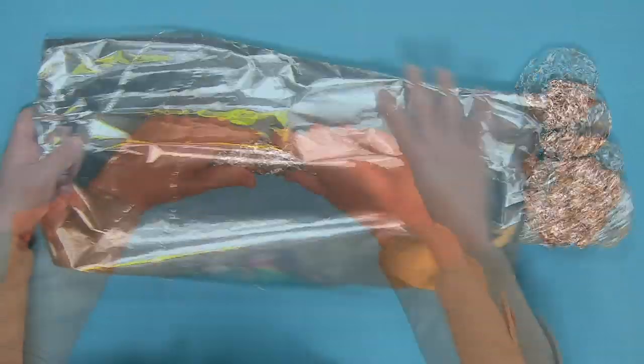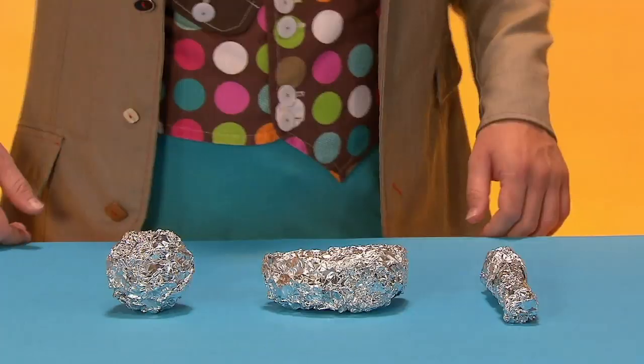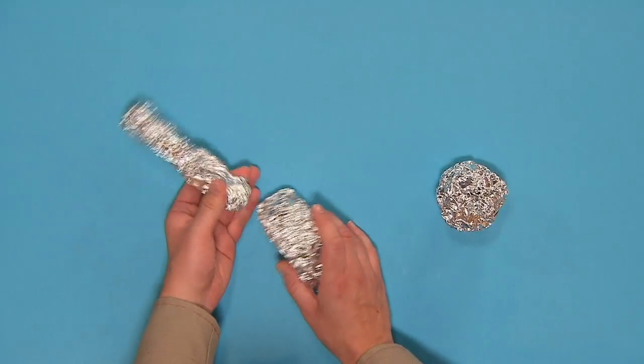And mould some more foil into a sausage shape for the tail. Next, tape them all together like this.